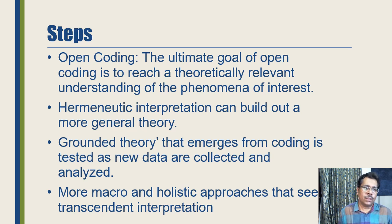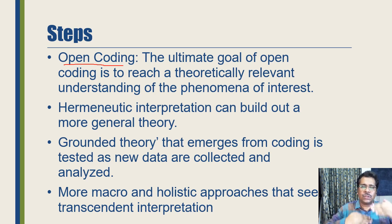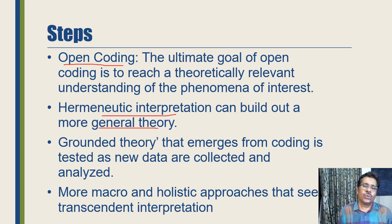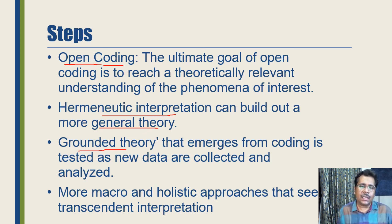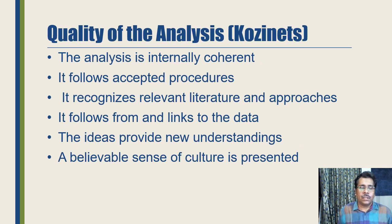After data is collected, one goes through the open coding process. The goal of open coding is to reach a theoretically relevant understanding of the phenomenon of interest — moving from codes to themes to overarching themes. From those themes, a hermeneutic interpretation is made to build a more general theory. Building on grounded theory, new data to test that theory are collected and analyzed. Apart from these micro perspectives, more macro and holistic approaches are also employed in the digital ethnographic process.